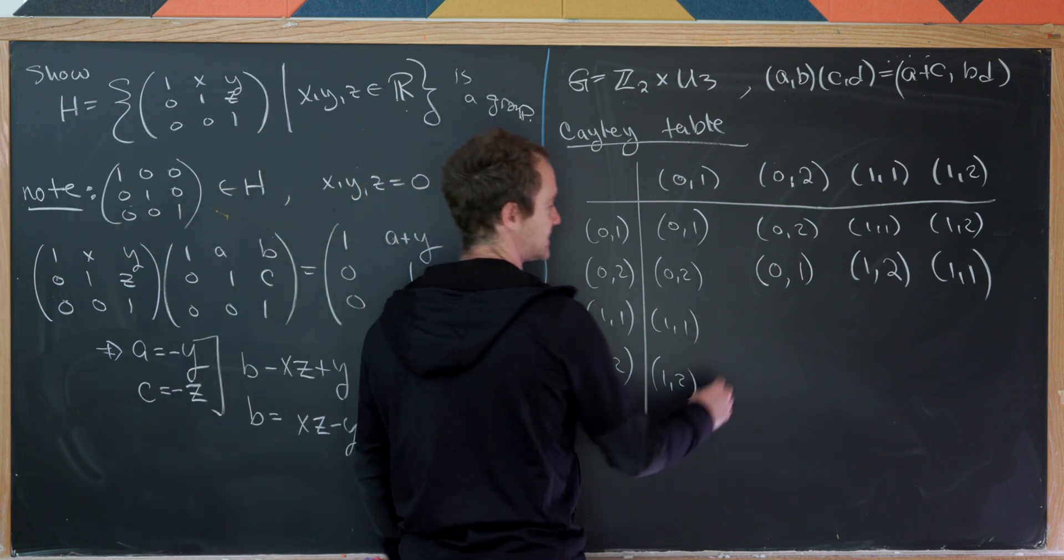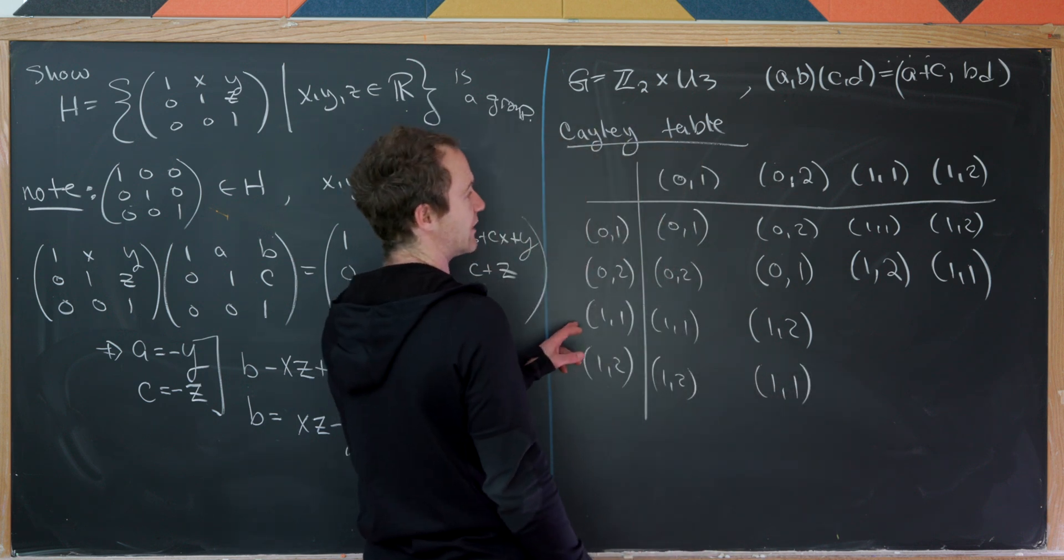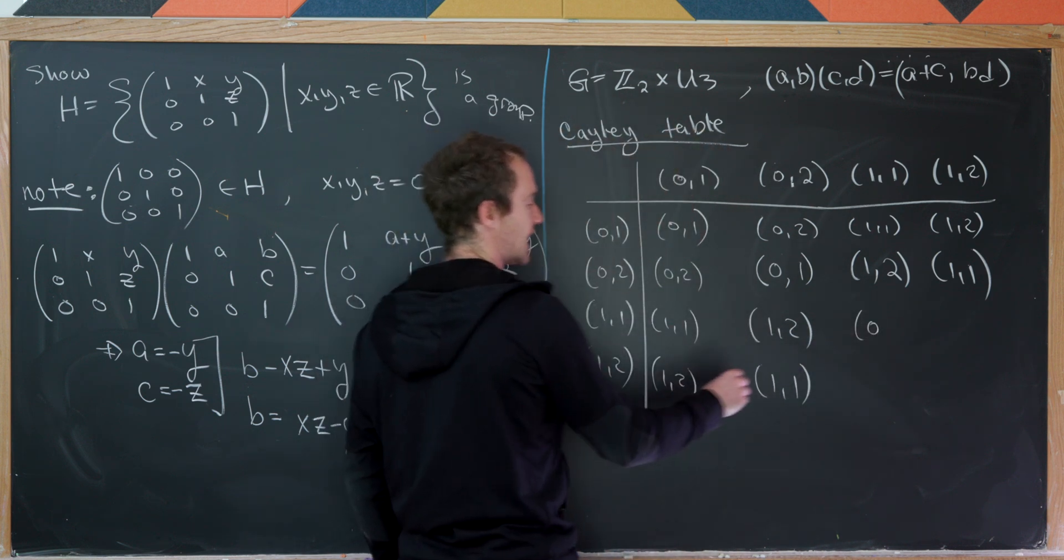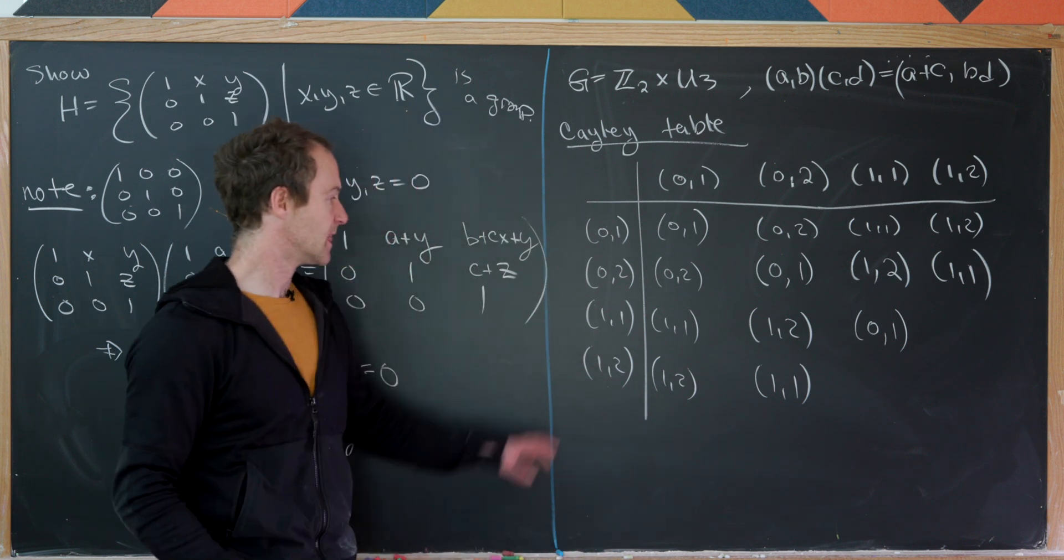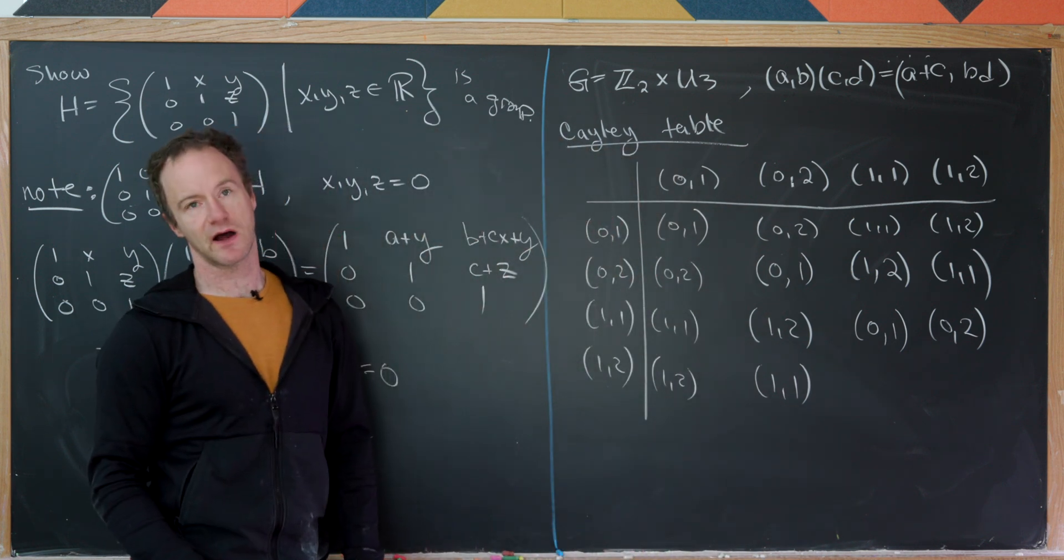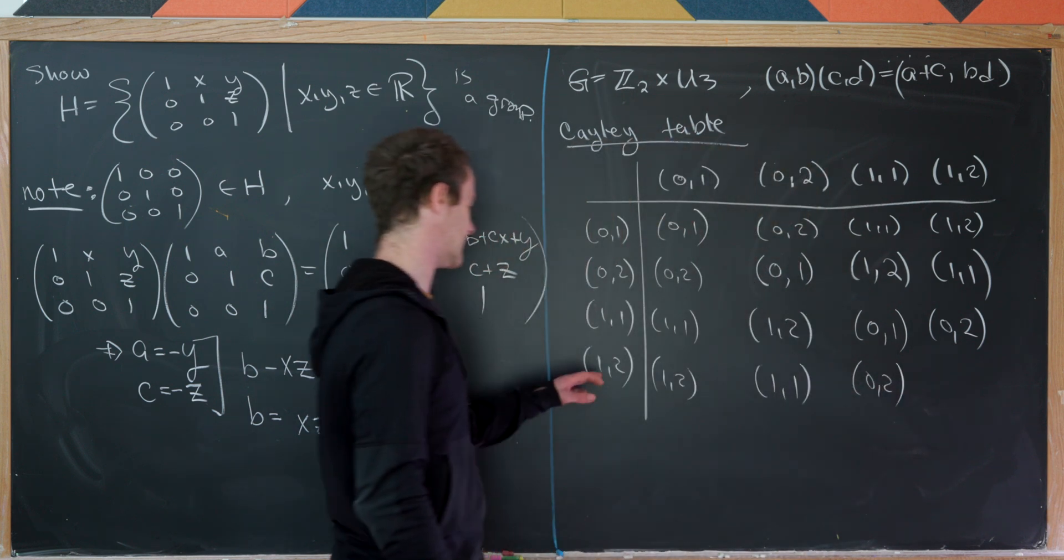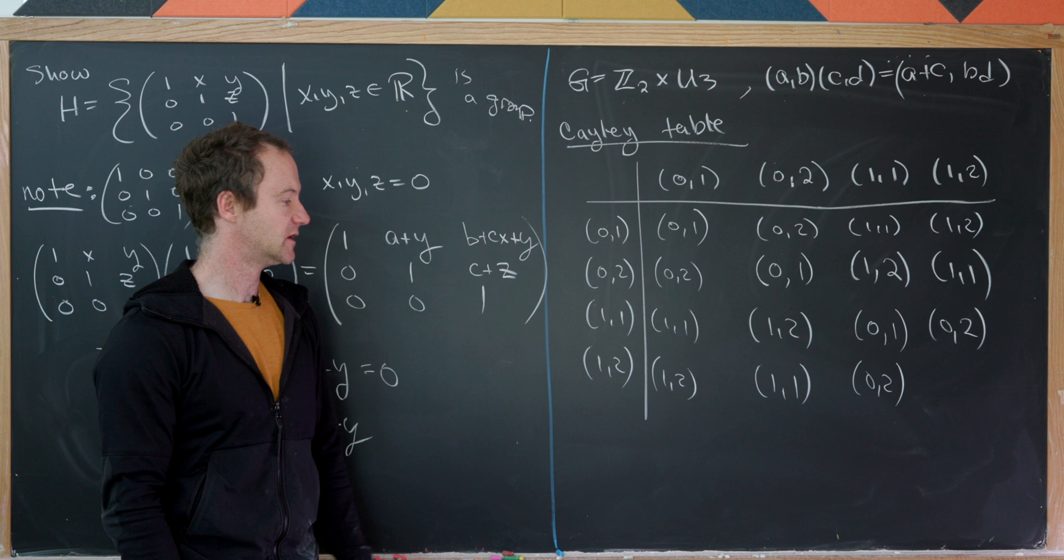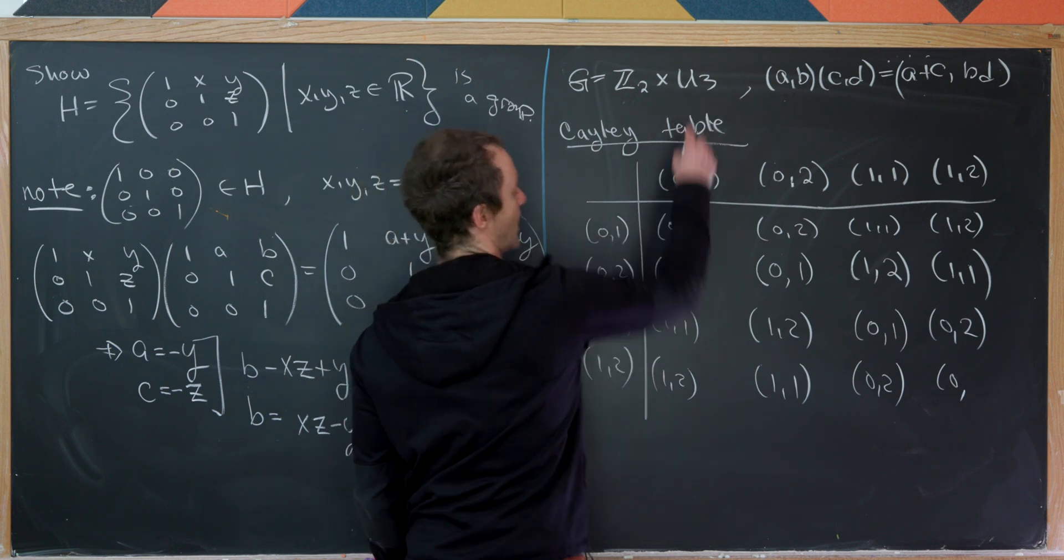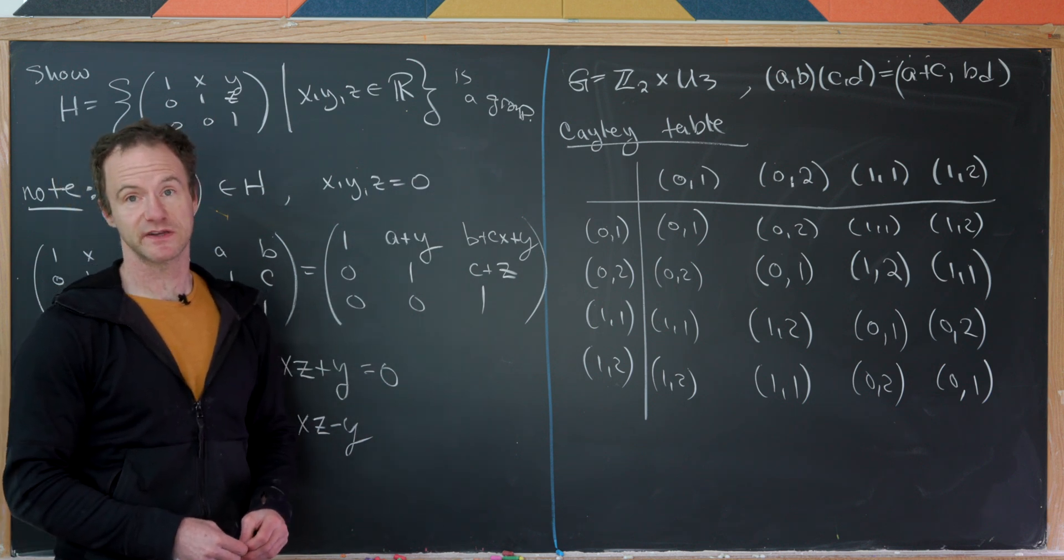Then we can fill in the rest. So let's see. By commutativity, we know this is 1, 2. And this is 1, 1. Now we have 1, 1 and 1, 1. So 1 plus 1 is 0 mod 2. And 1 times 1 is 1 mod 3. Now again, 1 plus 1 is 0 mod 2. And then 1 times 2 is 2 mod 3. Then by commutativity, we can fill in a 0, 2 right here. And now let's combine 1, 2 with itself. So 1 plus 1 is 0 mod 2. And 2 times 2 is 1 mod 3. So there we've got our full Cayley table for this group. And that's a good place to stop.